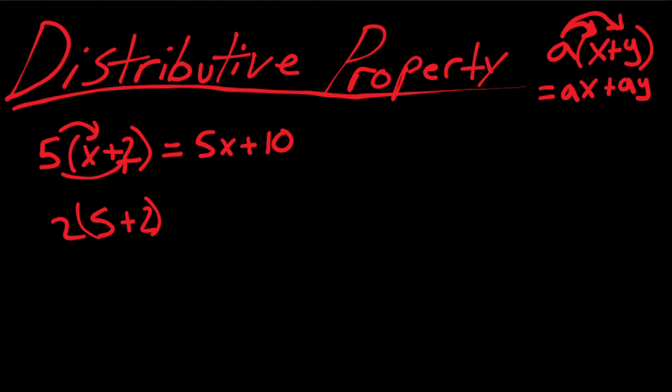Or if you use the distributive property, you would have 2 times 5 is 10, and then 2 times 2 is 4, and you end up with the same thing.